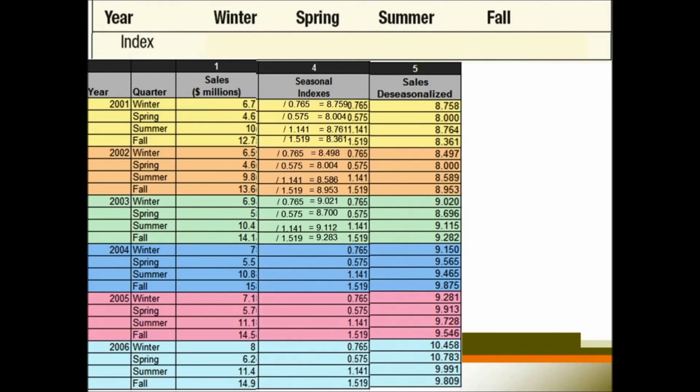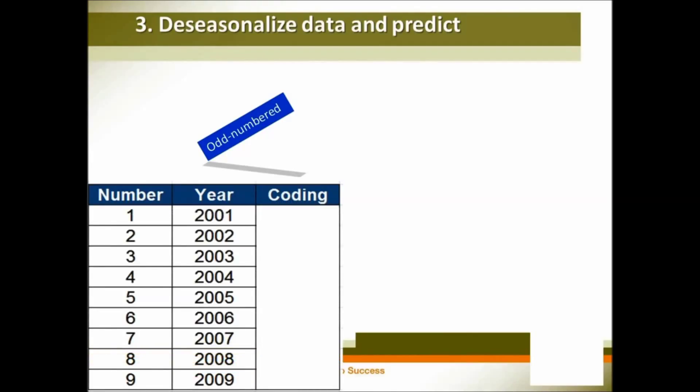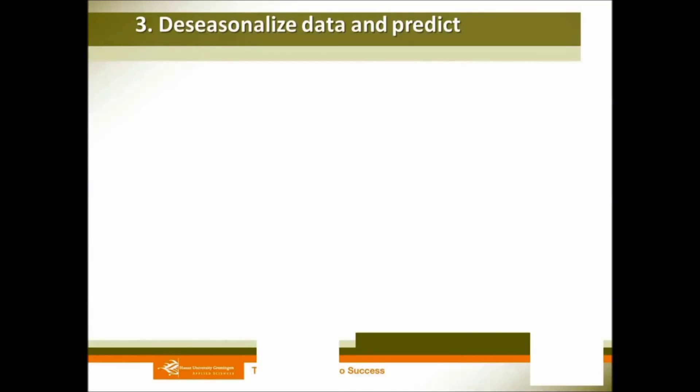The deseasonalized data is your y variable. So this is your dependent variable, and your time is the independent variable. But before we go to the regression analysis, we first need to learn how to code your time because we can have odd numbered years or time, we can also have even numbered.